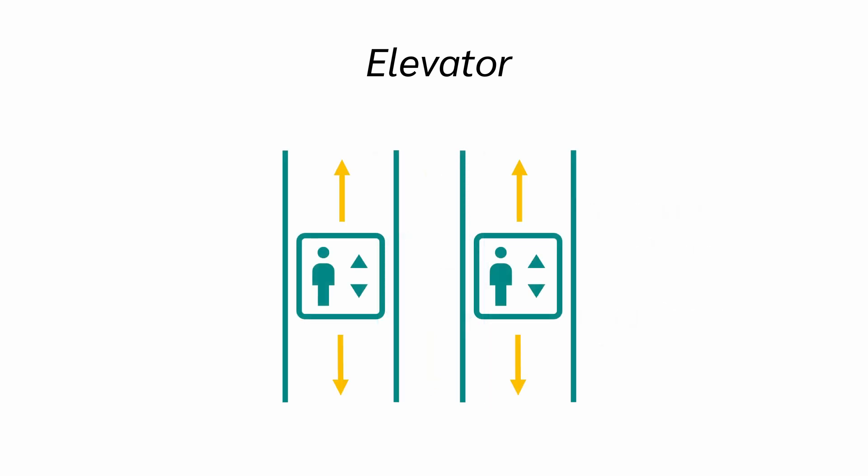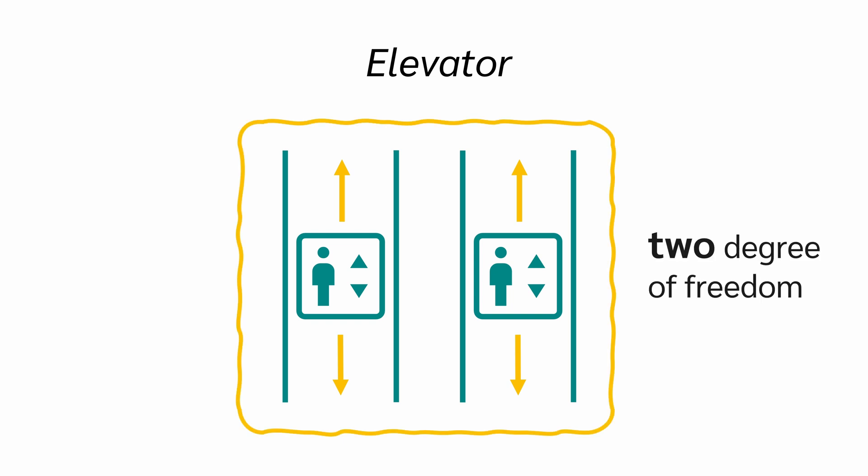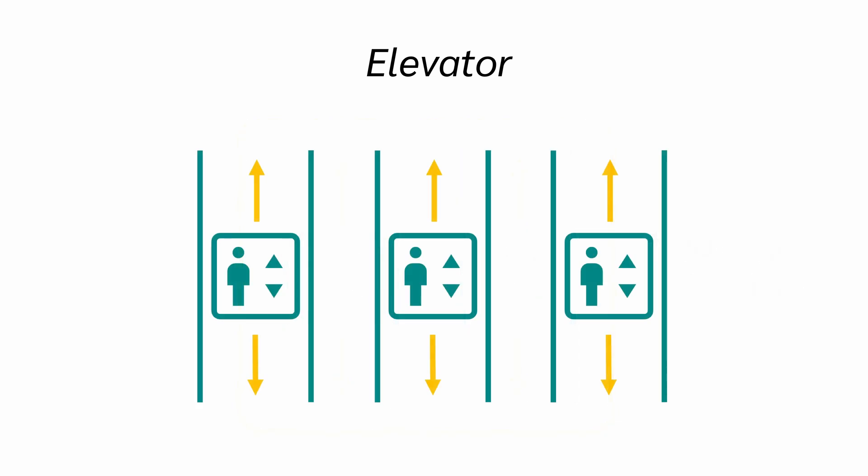If we have two elevators, each one can move up or down. If we treat them as one system, we have two degrees of freedom. If we have three elevators, we have three degrees of freedom because each can move up or down.